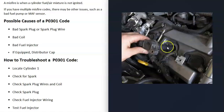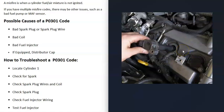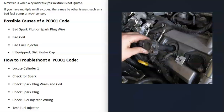Another method: if you have individual ignition coils, you can swap the cylinder one coil with another cylinder's coil, clear the code, and see if the misfire code follows the coil to the new cylinder. If it does, then you know that ignition coil is bad.